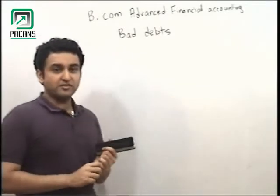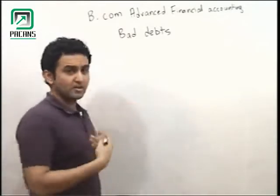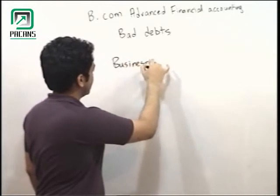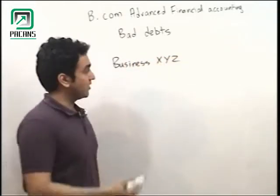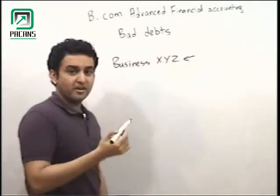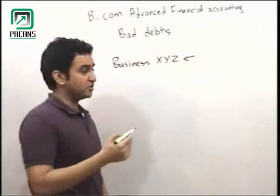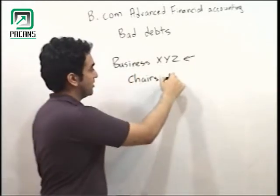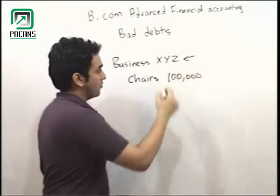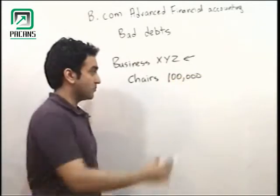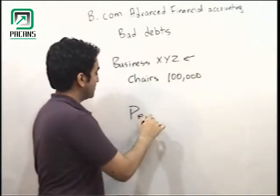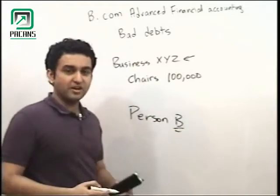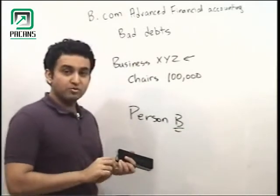For example, I have a business XYZ, and I have a product — I have chairs. I have some people. Now for example, person B is a person who has one lakh rupees and wants chairs.